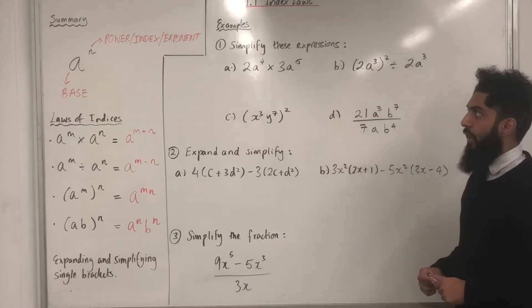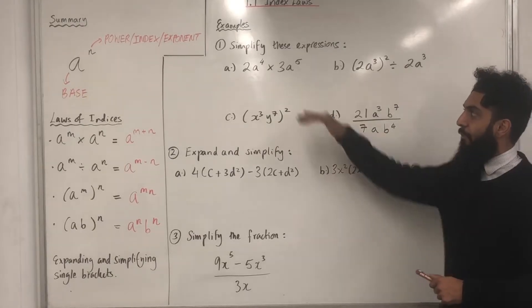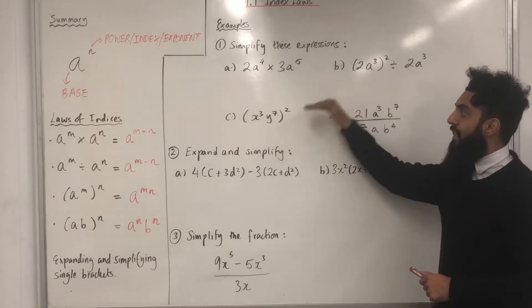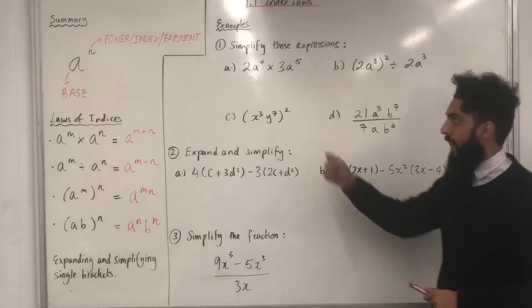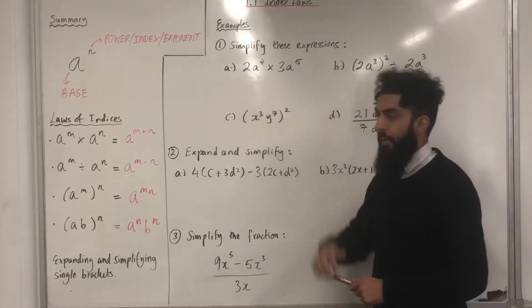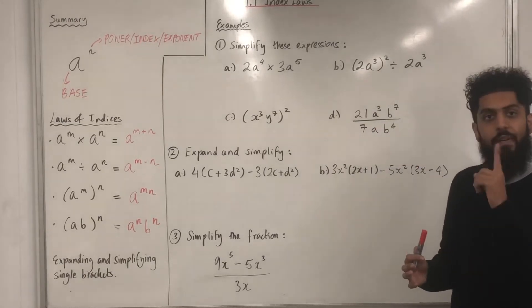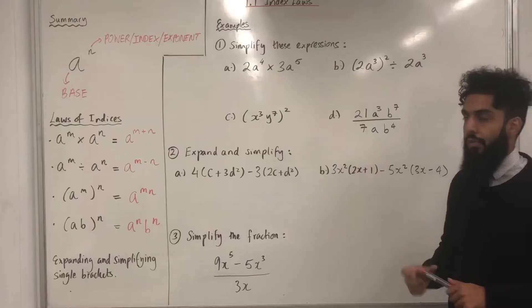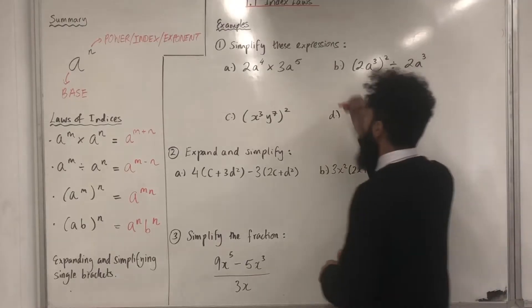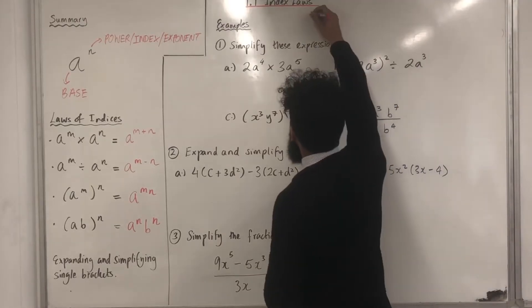Example number one: simplify these expressions. We have parts A, B, C and D. Before I simplify part A, there is a very important keyword I would like to go through, and that keyword is coefficient.